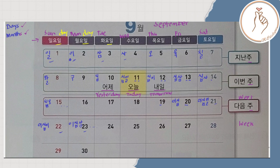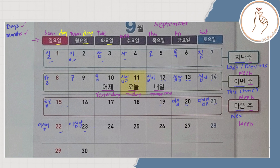Due is week. Then ginan means last or previous — so ginan-due is last week, nagdaang linggo. Then ibon means this — so ibon-due is this week, itong linggo. And daum-due is next week, since daum means next — susunod na linggo.